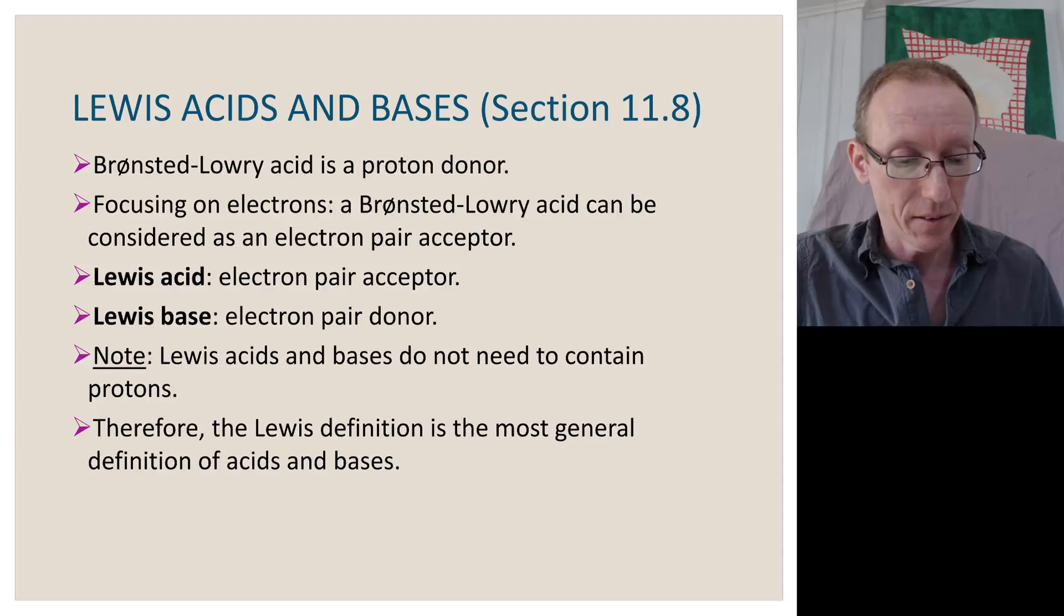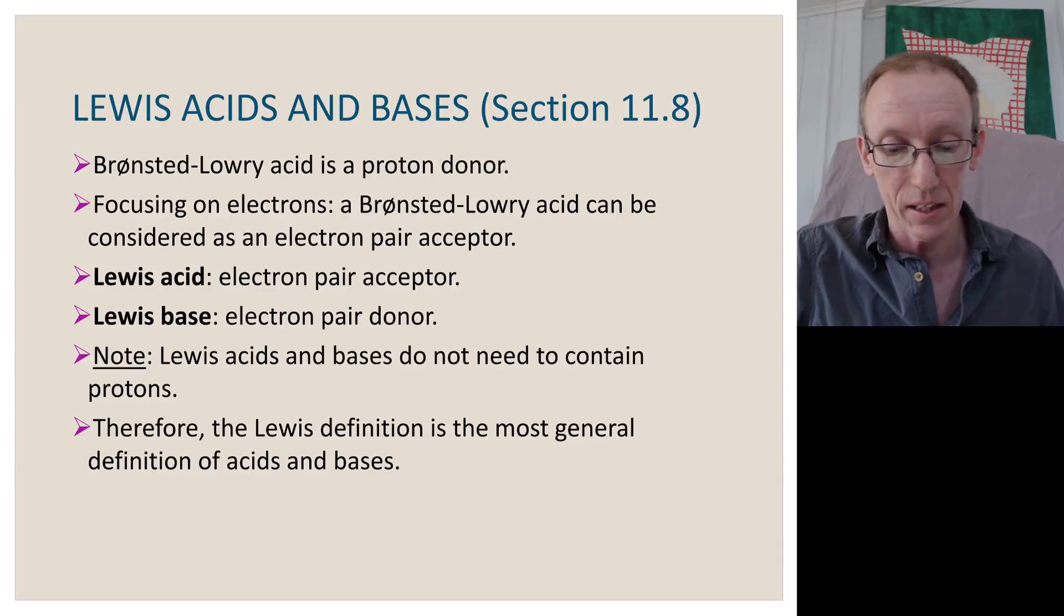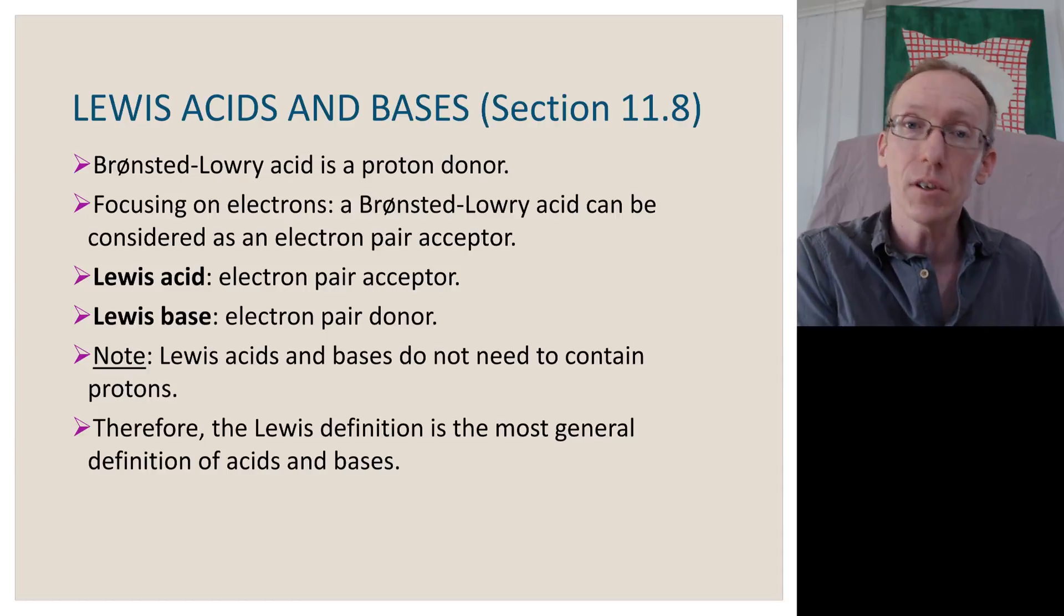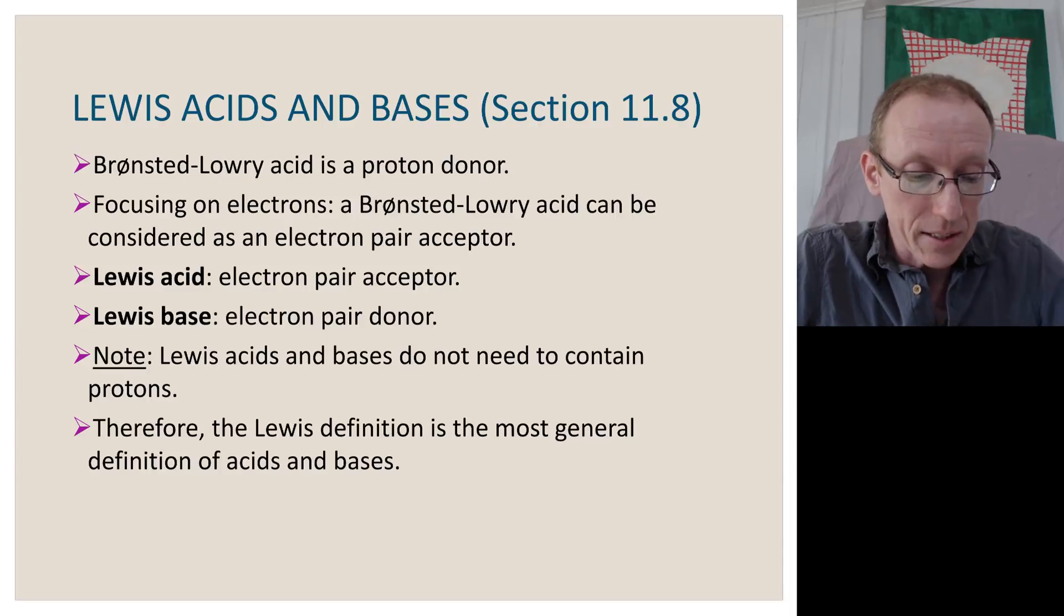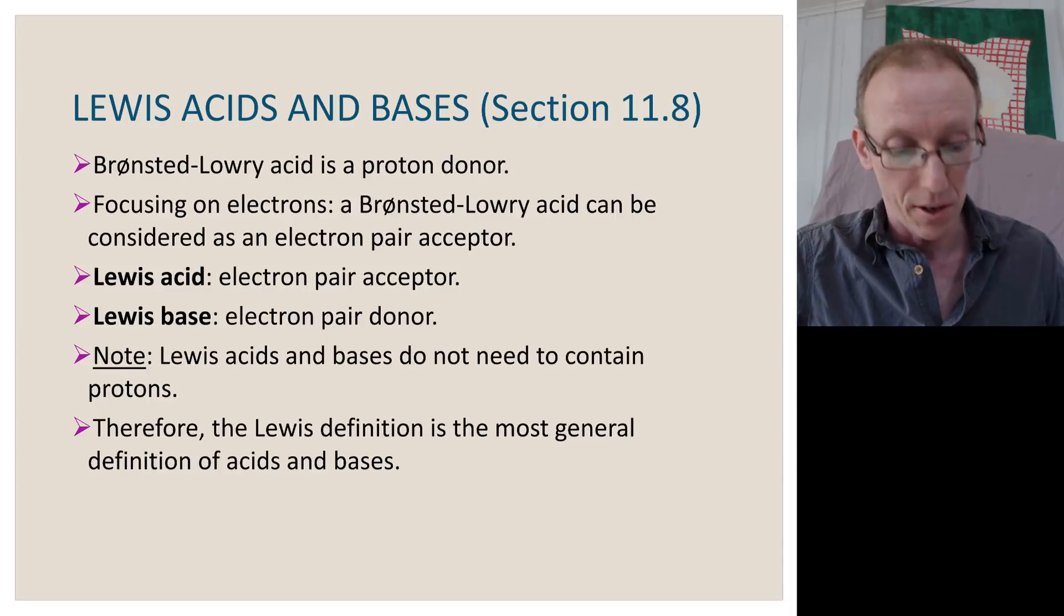If we look at Lewis acid-base theory, acids are substances that accept electron pairs. And so in terms of Lewis acid-base theory, a Bronsted-Lowry acid may be considered as an electron pair acceptor because it's going to accept a pair of electrons off hydroxide or off some kind of electron pair donor. So a Lewis acid is an electron pair acceptor, Lewis base is an electron pair donor.